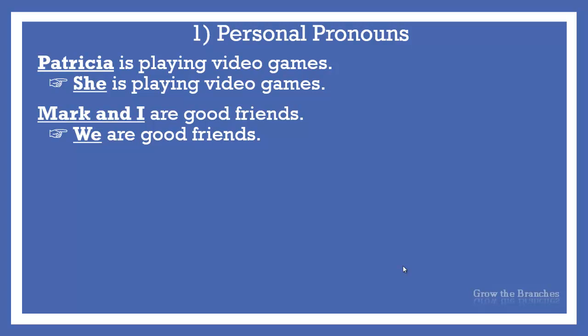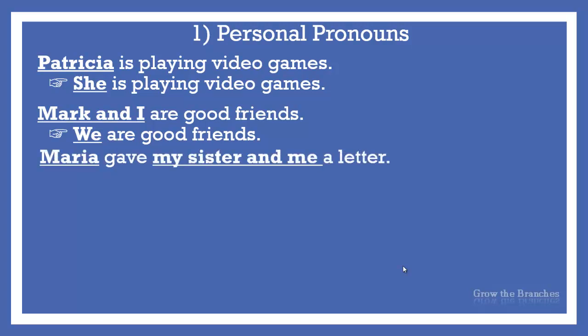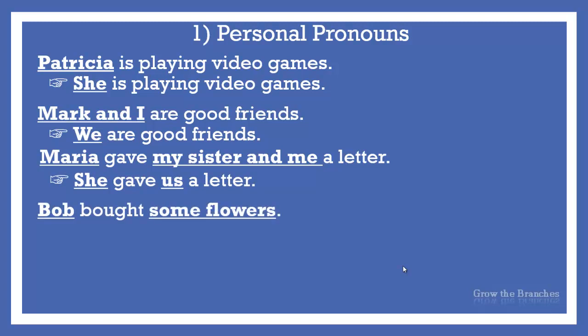I didn't say I and Mark, but I said Mark and I to express politeness. In the objective case, we apply the same rule too. Maria gave my sister and me a letter — the objective pronoun me comes last. We use I because it is subject, but we use me when it is object. Maria gave my sister and me a letter becomes she gave us a letter. Bob bought some flowers — or he bought them. The noun flowers is replaced with the objective pronoun them.